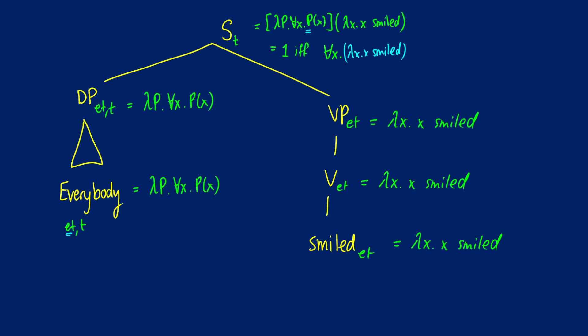So lambda X dot X smiled with X applied to it just reduces to X smiled. Our final truth condition is going to be: true if and only if for all X, X smiled. And we can write this in regular words to match our other trees. That's 'everybody.'